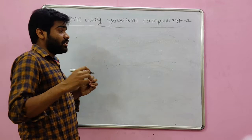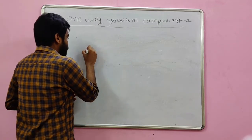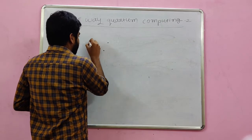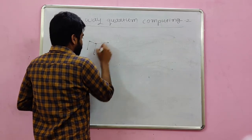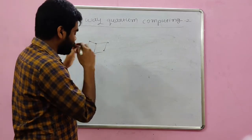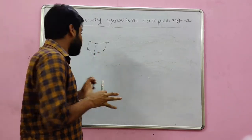Generally the cluster states is like a graph state. Like the atoms, suppose these are the atoms they are connected together. This is like the graph state. Similarly we can consider the cluster states like this.